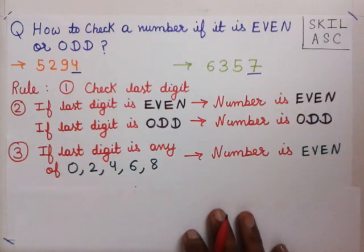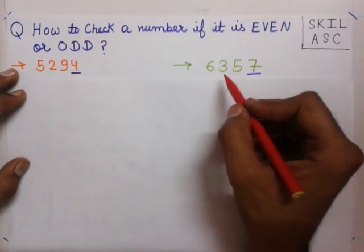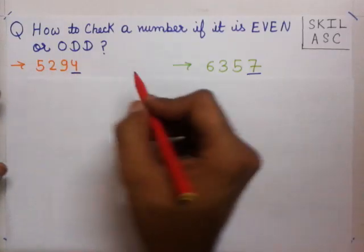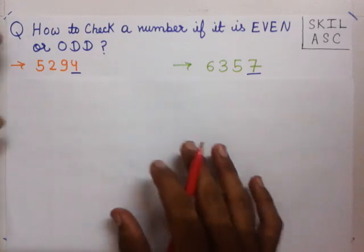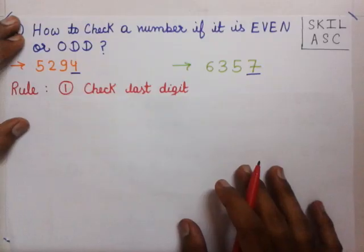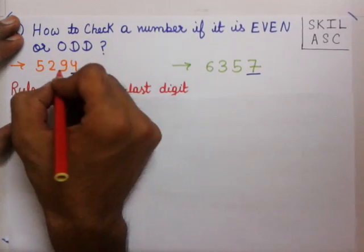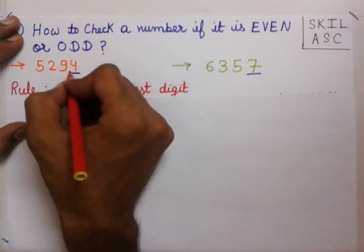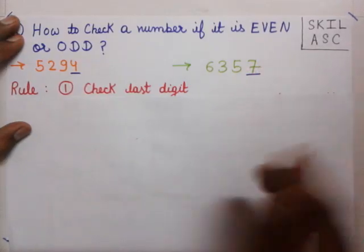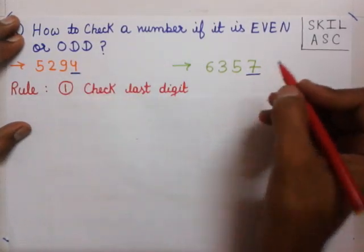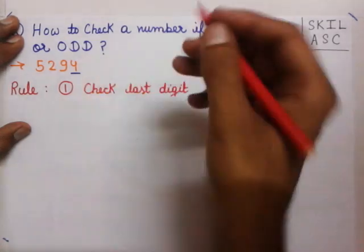Now let us see how to check whether a number is even or odd. We have two numbers: 5294 and 6357. The rule is: check the last digit. We don't need to check the complete number — we only need to check the last digit of the number to determine whether it is even or odd.